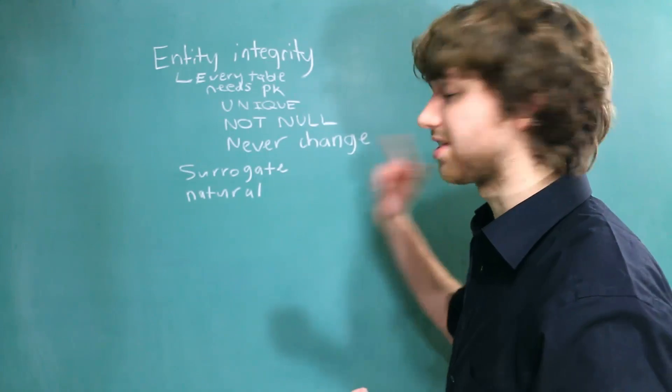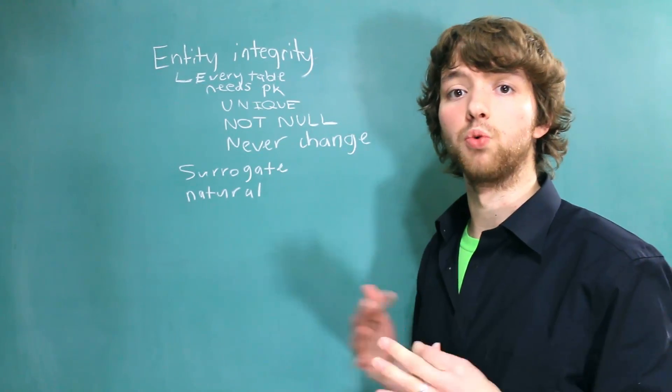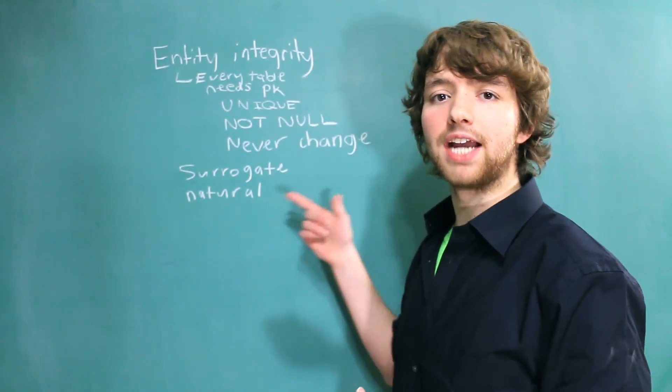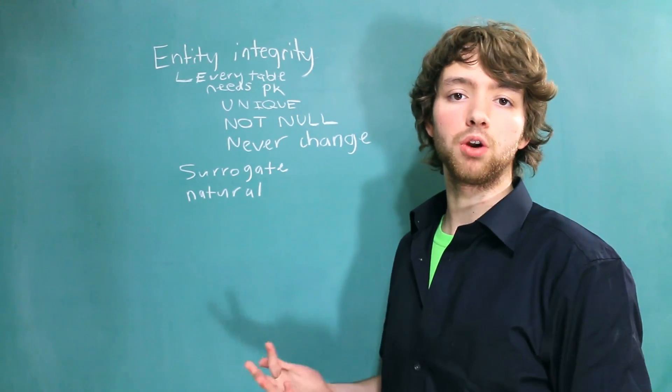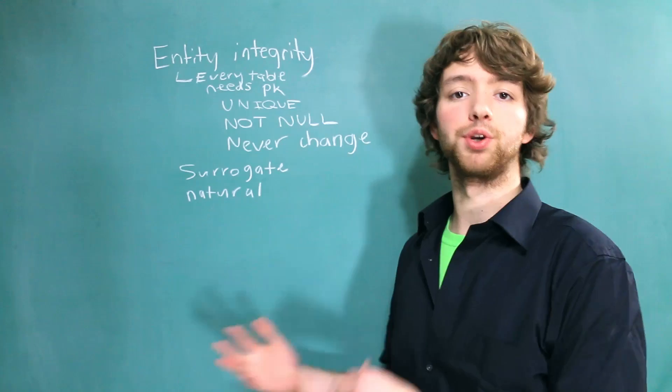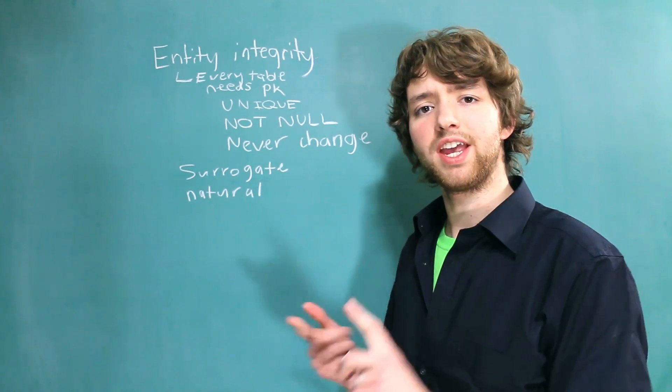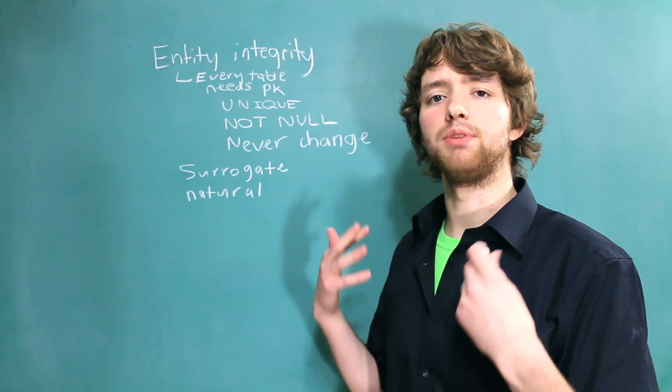Surrogate keys are simple, they're just computer-generated numbers that have no real world meaning. So this is often the ID column in a table. Natural keys, on the other hand, are a little bit harder to work with because these have to have real world meaning, such as a username, or an email, or anything that can be unique.